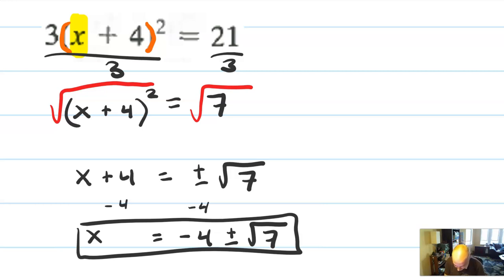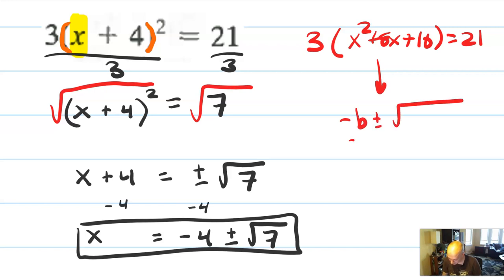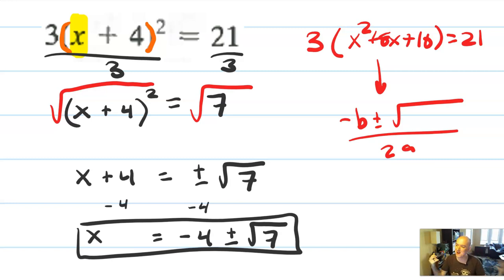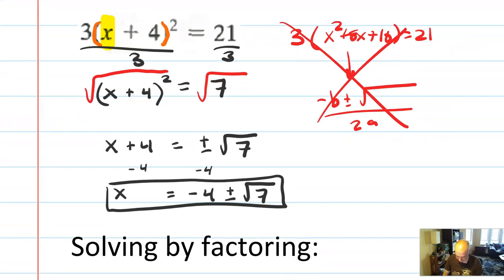If you had multiplied everything out and had 3(x² + 8x + 16) = 21, you would have had to use the quadratic formula in the end — I can tell because I see that √7, which usually only comes from a quadratic formula problem. You would have made your work a lot harder. If you have a single x, just isolate it and take the square root of both sides.